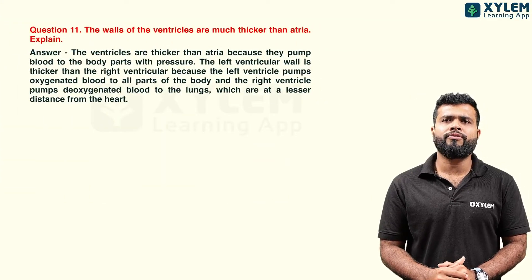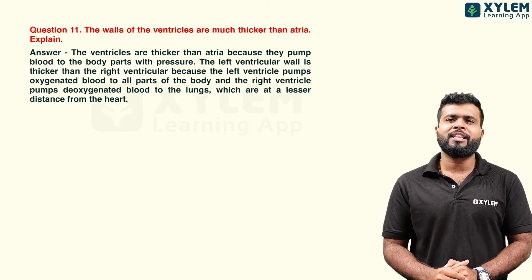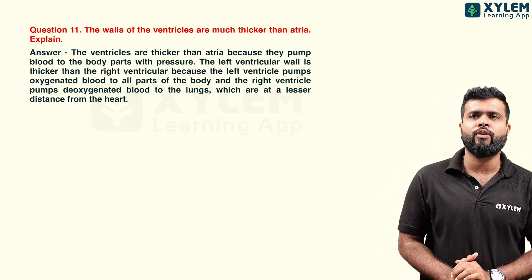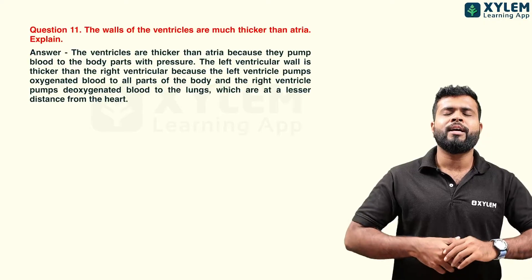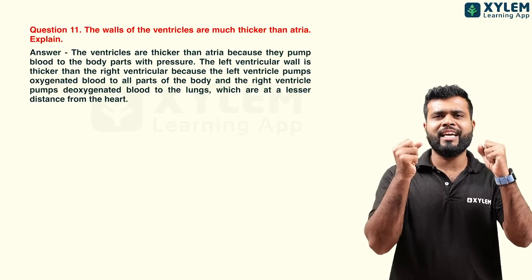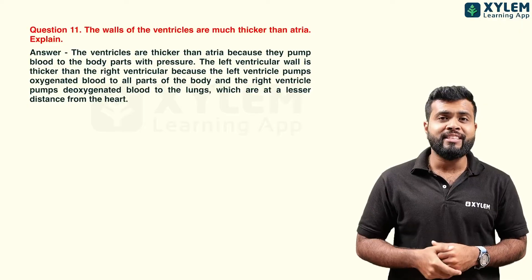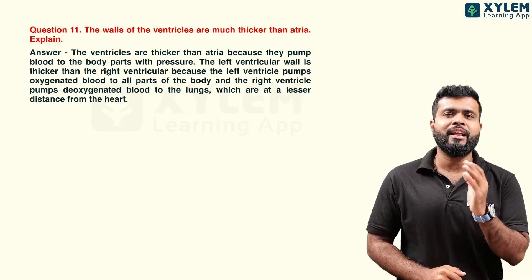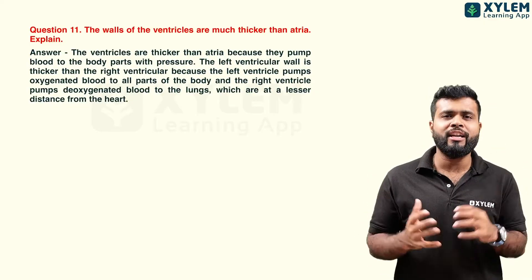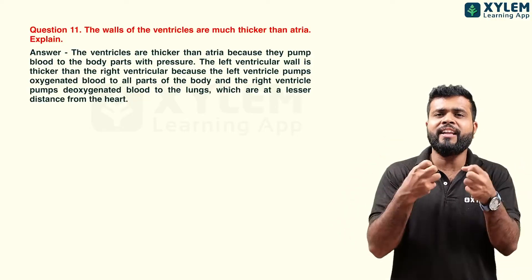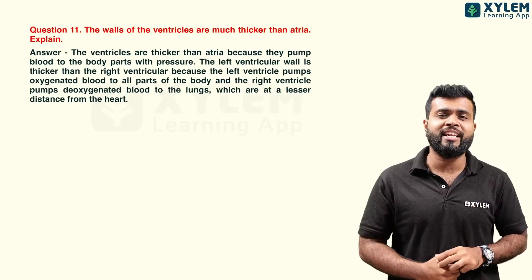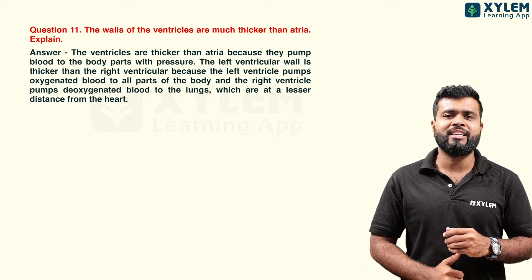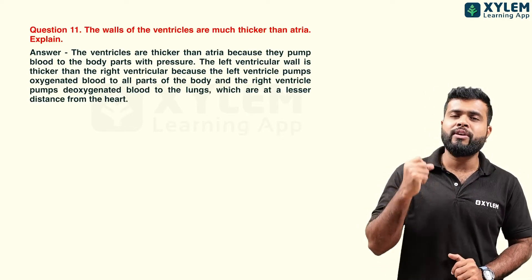Next question: the walls of the ventricles are much thicker than the atria — explain. Atria contract to push blood into the ventricles. Ventricles must contract more forcefully to pump blood out of the heart to the lungs and the entire body, requiring greater muscular force and therefore thicker walls.